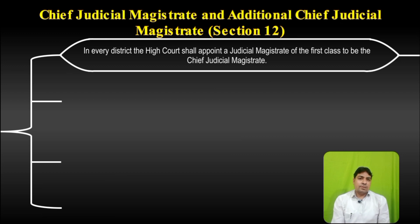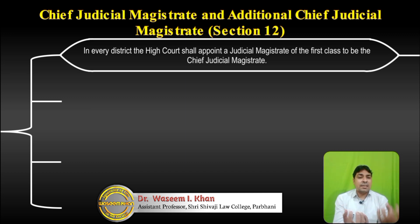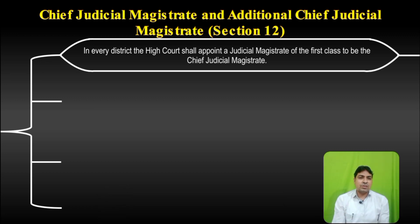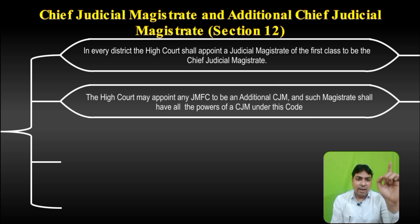Section 12: Chief Judicial Magistrate and Additional Chief Judicial Magistrate. In every district, the High Court shall appoint a Judicial Magistrate of 1st class to be the Chief Judicial Magistrate. तो हर district में High Court क्या करेगा? Judicial Magistrate 1st class में से ही किसी एक को CJM appoint करेगा। High Court appoint कर रहा है Chief Judicial Magistrate को, JMFC में से।